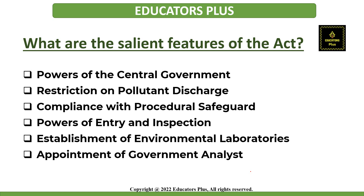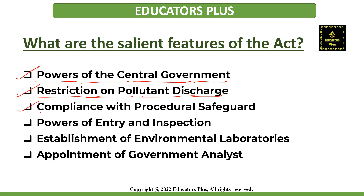Regarding the salient features: it provides powers to the central government to take all such measures as it deems necessary for the purpose of protecting and improving the quality of the environment in coordination with state governments. It provides restriction on pollutant discharge — no individual or organization shall discharge, emit or permit to discharge or emit any environmental pollutant in excess of the prescribed standards. There is also compliance with procedural safeguards: individuals shall not handle any hazardous substance except in accordance with prescribed procedures and safeguards.